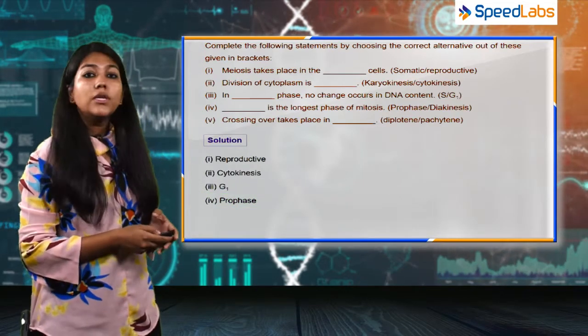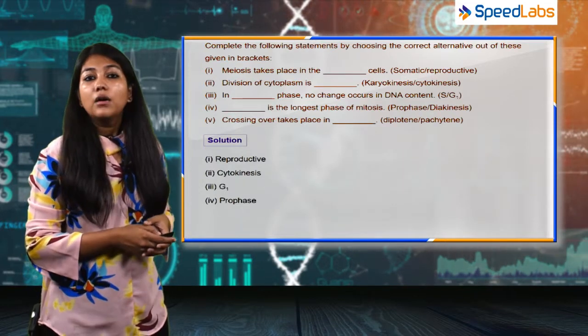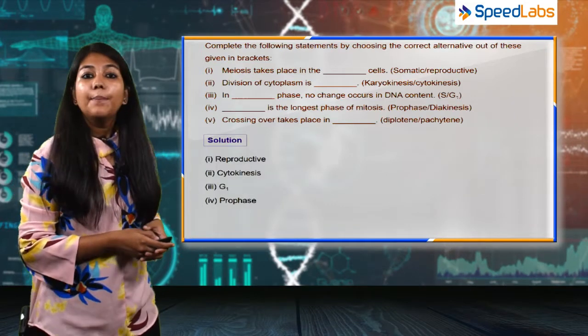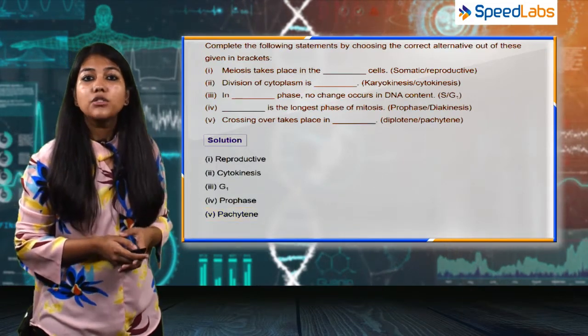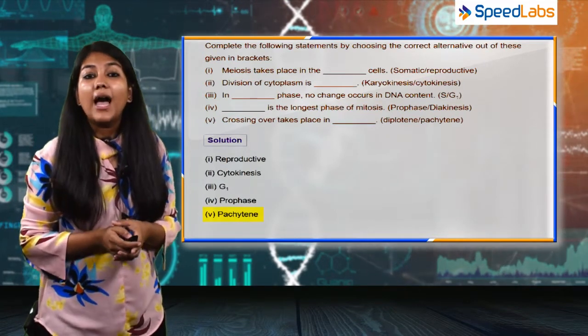Moving on to the next part of this question: crossing over takes place in blank. Options are diplotene and pachytene, and the answer to this question is pachytene. In diplotene, there is formation of the X-shaped structures that are called chiasmata.